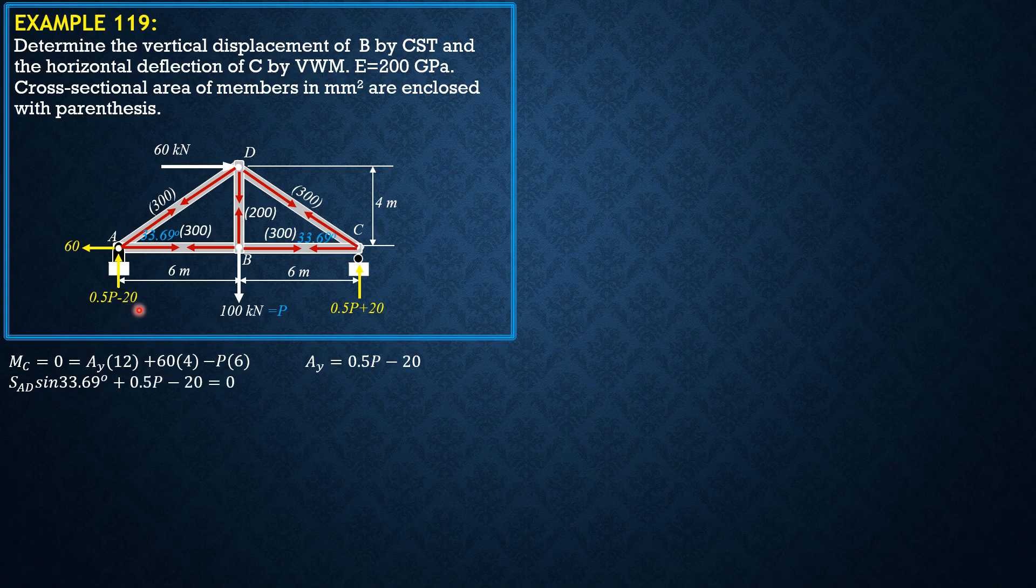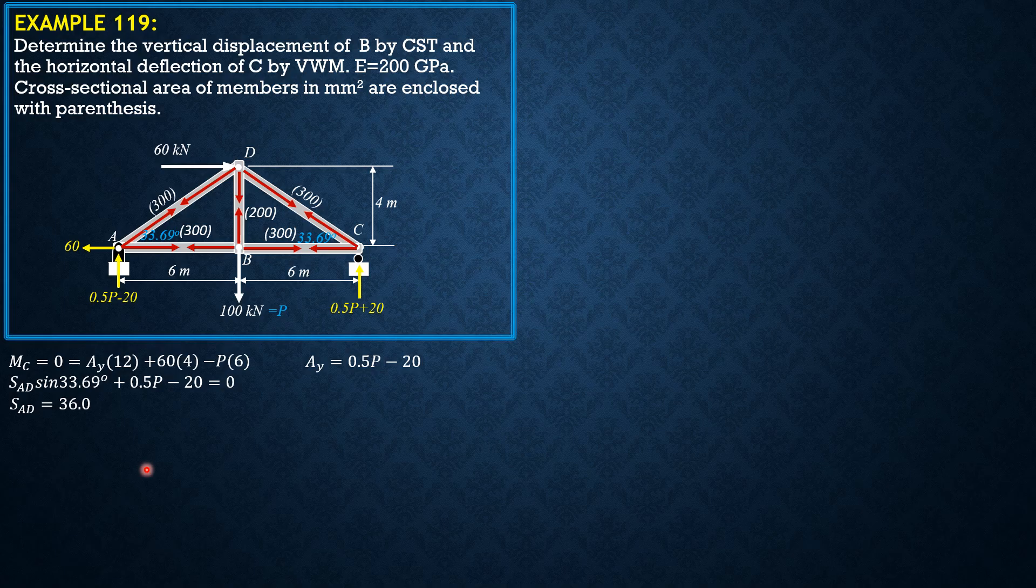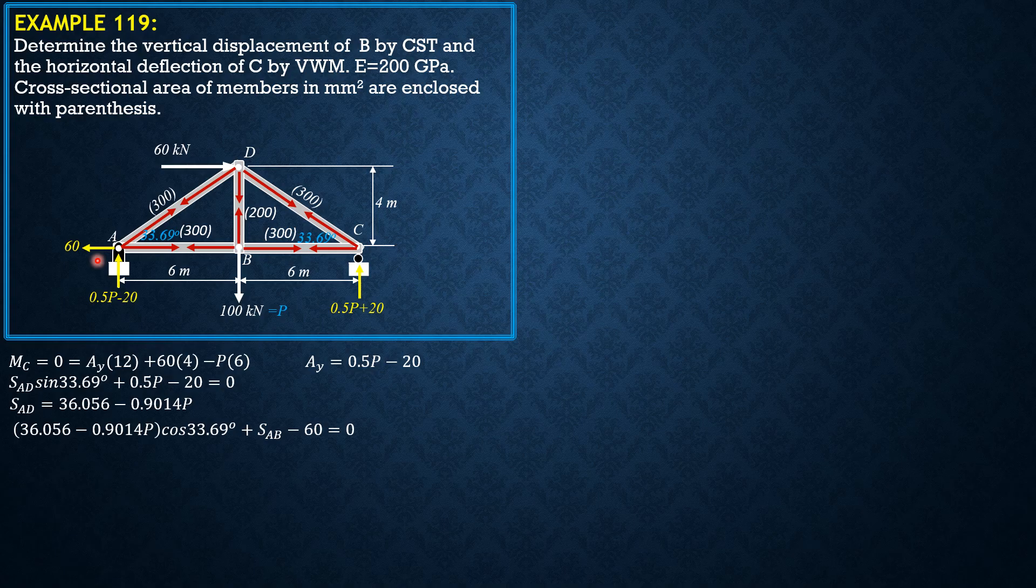So SAD in terms of P is 36.056 minus 0.9014P. Then summation forces X: 36.056 minus 0.9014P times cosine 33.69 plus SAB minus 60 equals 0. So SAB simplifying is equal to 30 plus 0.75P.